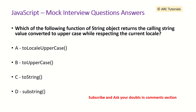Which of the following functions of the string object returns the calling string value converted to uppercase while respecting the current locale? Again, if you read the question correctly, you will find the answer. toLocaleUpperCase will give you the calling string value converted to uppercase with respect to the current locale.